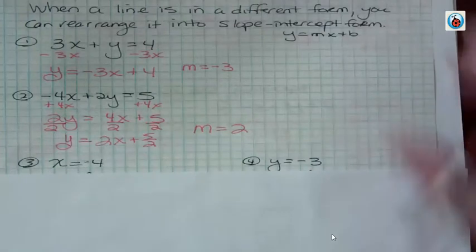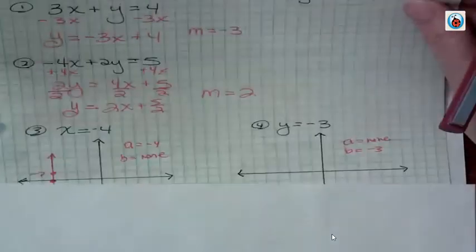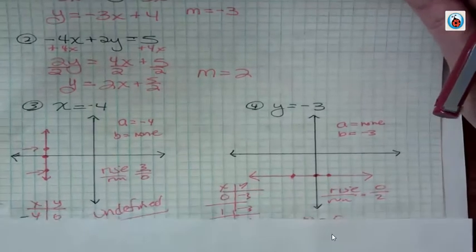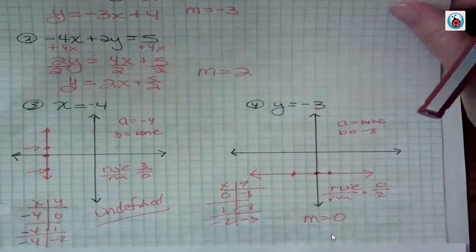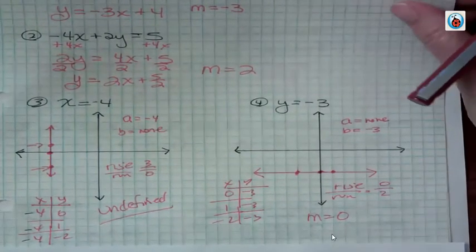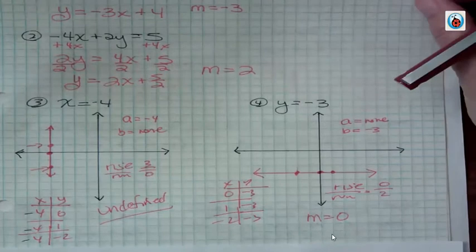x equals negative 4 or y equals negative 3. The easiest way for me to show you how to find the slope of those lines is to actually graph them. And so I did this earlier and made a pretty significant mistake, so I'm kind of repeating the video.